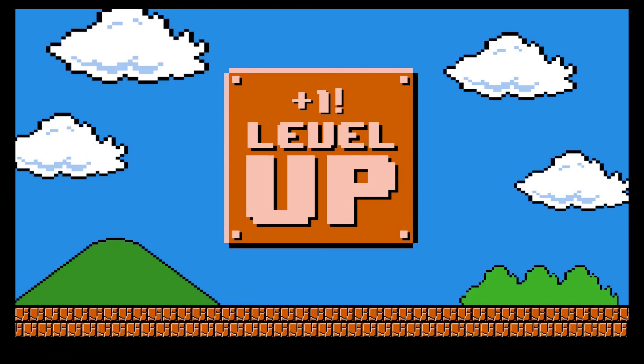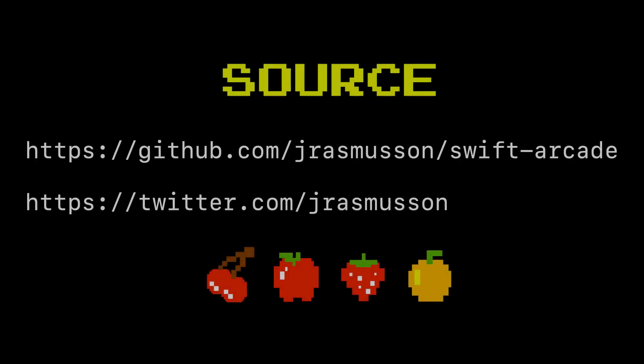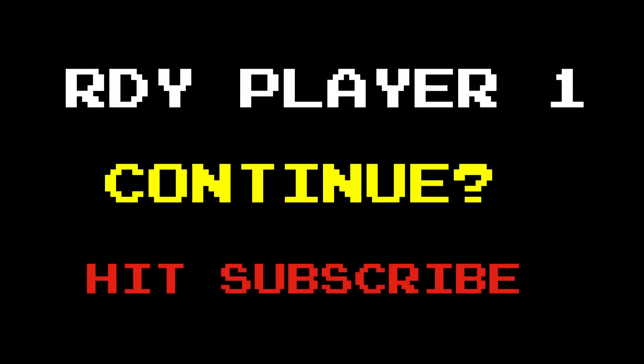That's it — congratulations! Now you understand how protocol delegate and data source patterns work, and you're free to use those in your own applications. Source code for all this you can find on GitHub. If you'd like to be notified when future episodes are coming out, please follow me on Twitter. And if you'd like to continue to see more episodes like this, hit subscribe. I hope you enjoyed today's episode — have fun everyone, good luck with your programs out there. See you next time!